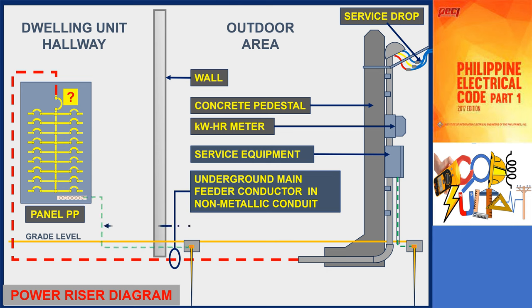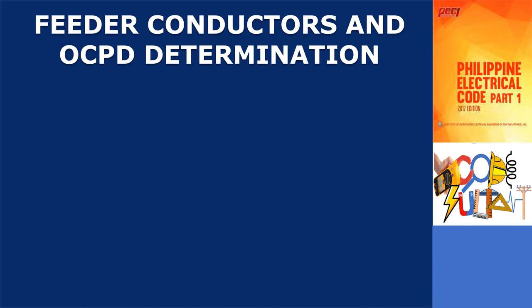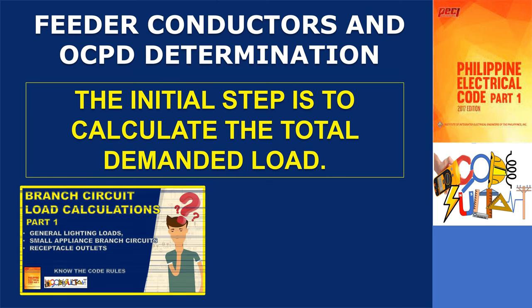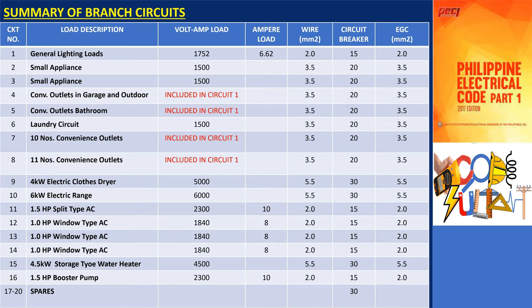Further, we will also determine the size of the grounding conductor. To determine the sizes of conductors and overcurrent protective devices, the initial step involves calculating the total demanded load. Since the branch circuit load calculation has already been completed in the previous videos, we can now proceed to calculate the overall demand load. When calculating the total demand load, it is essential to consider the following factors.